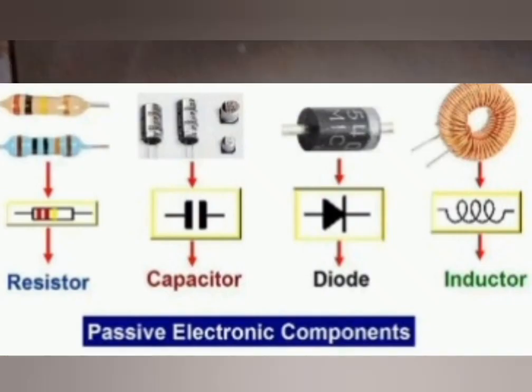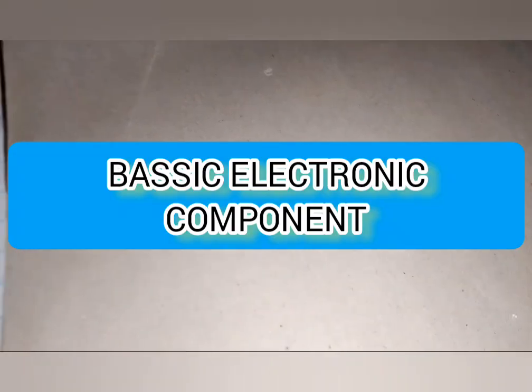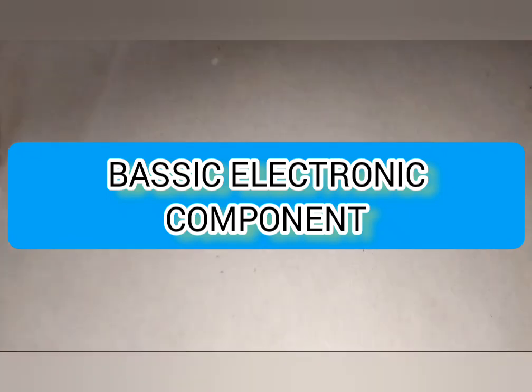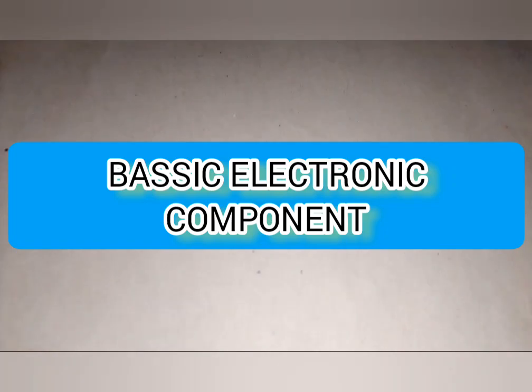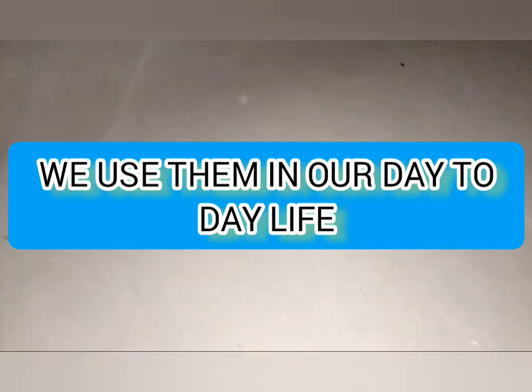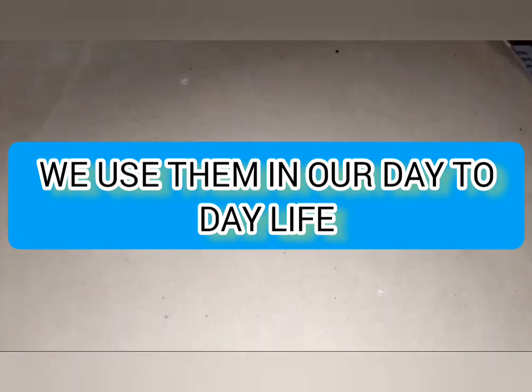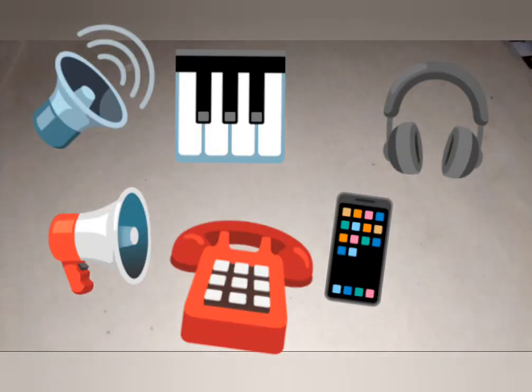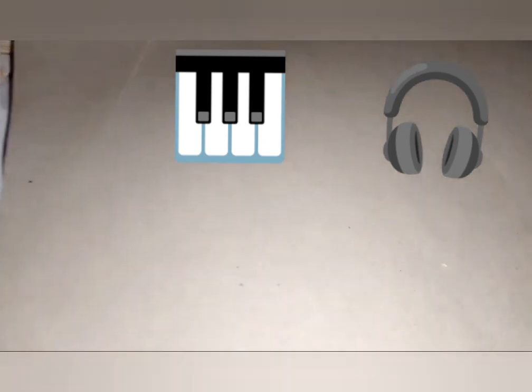Now we go straight to basic electronic components, which is our main field of interest. Basic electronic components are the electronic components that we use in our day-to-day life in electronics. It is difficult to see a machine or an electronic device working without at least one of these — it is very difficult, it is rare, and in most cases I would say it is impossible.